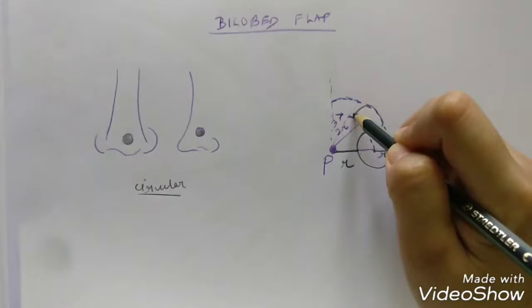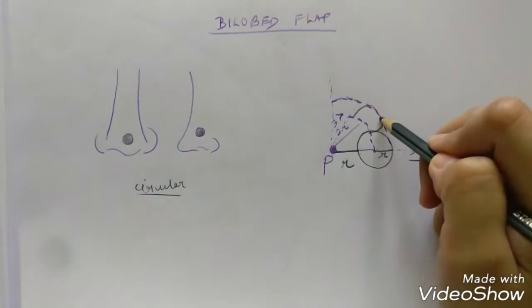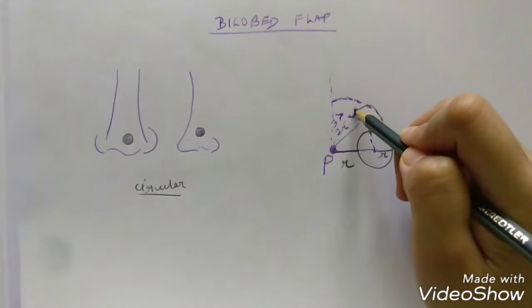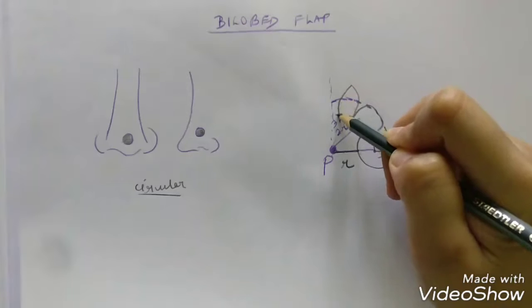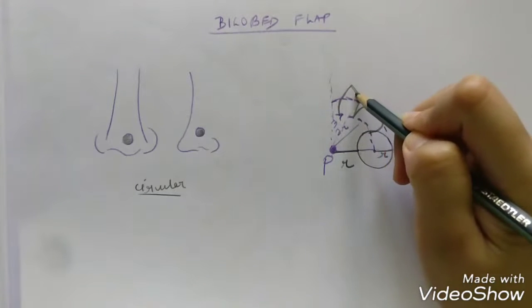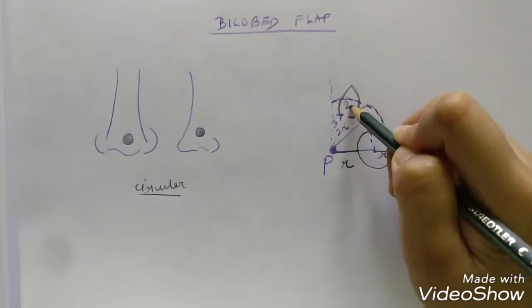The next lobe of the flap, since there is more skin laxity on that side, can be a little smaller than the first lobe. It is marked so that it is a bit more elliptical in shape to avoid the formation of a dog ear. So this is the first lobe and this is the second lobe.